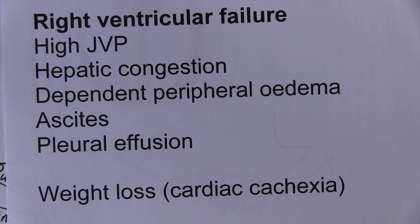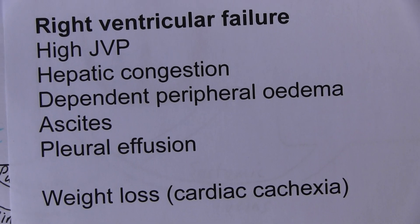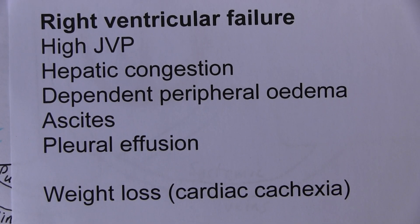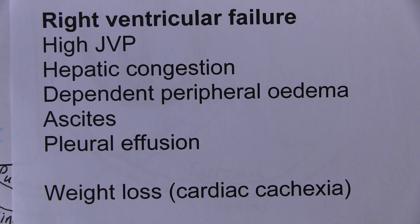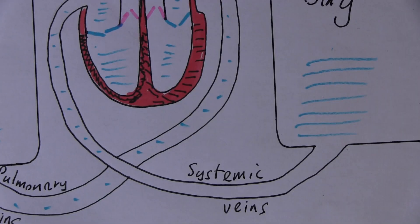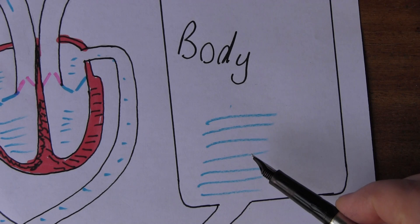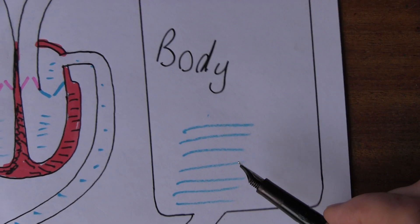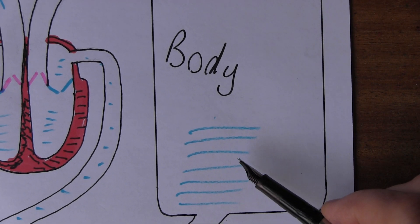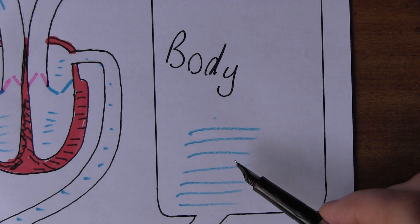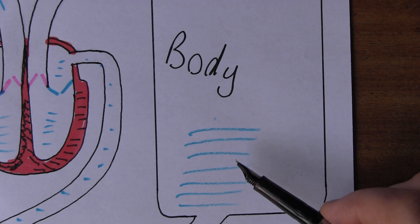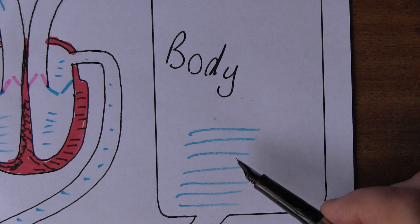The peripheral edema is dependent. Dependent means it's affected by gravity. There's going to be backlog into the systemic circulation. That's going to increase the pressure in the systemic capillaries.